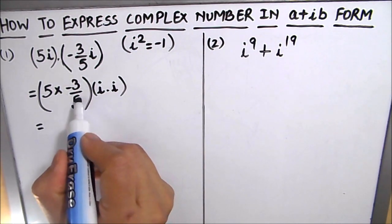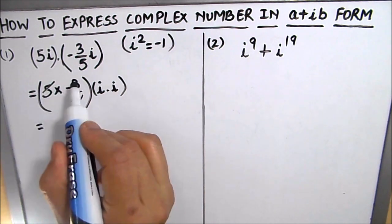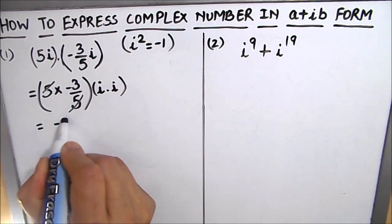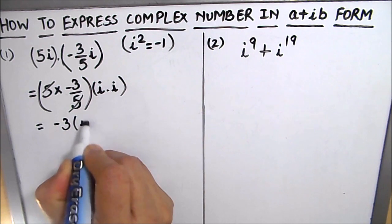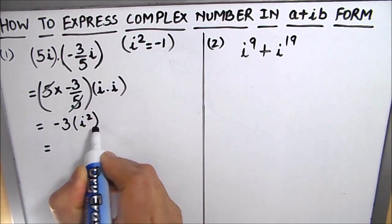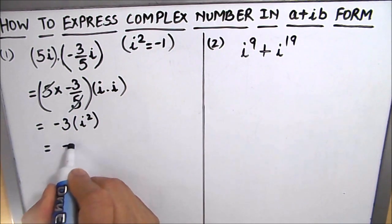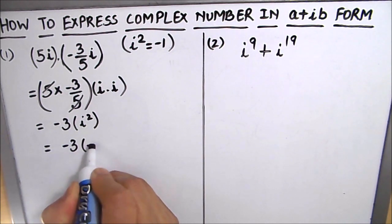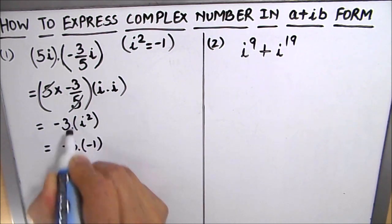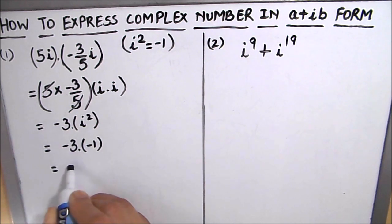So here this gets cancelled. So this will become minus 3 times iota square. As iota square is minus 1, so minus 3 times minus 1. So this will become 3.